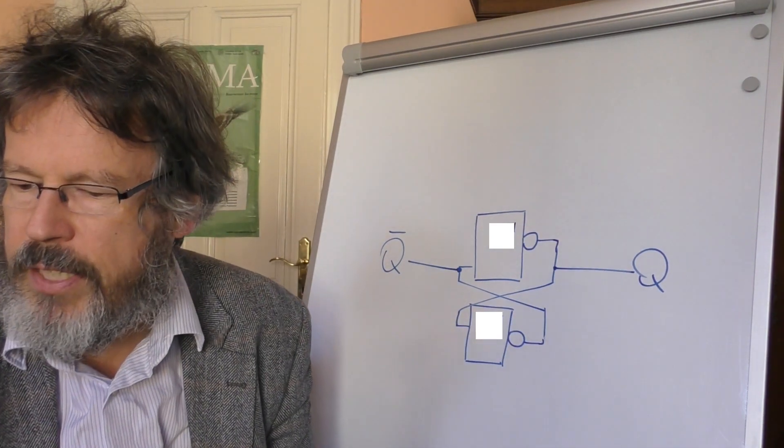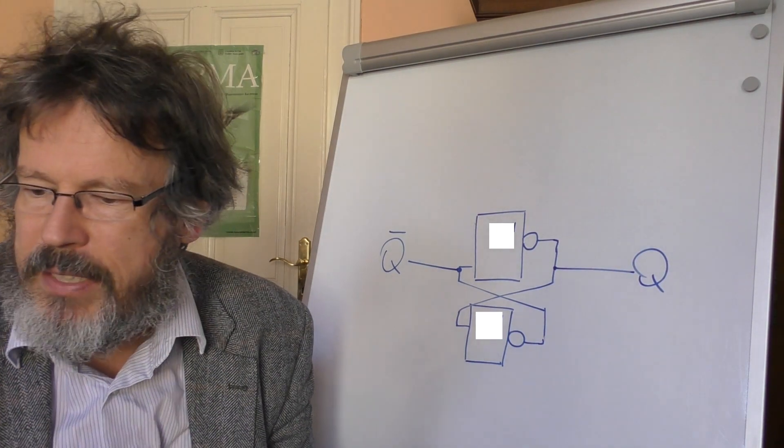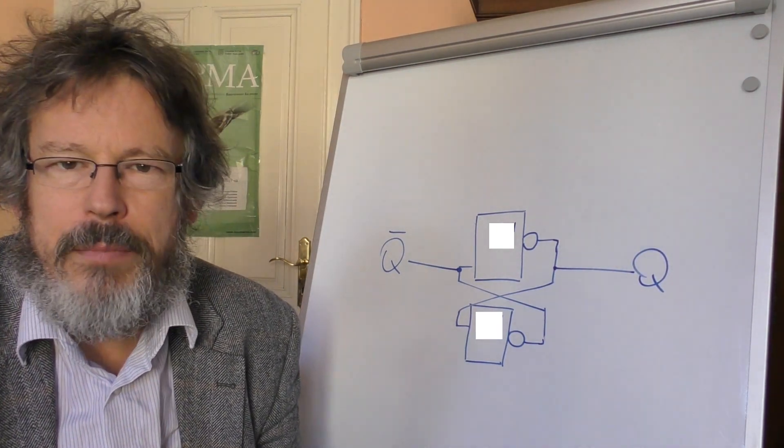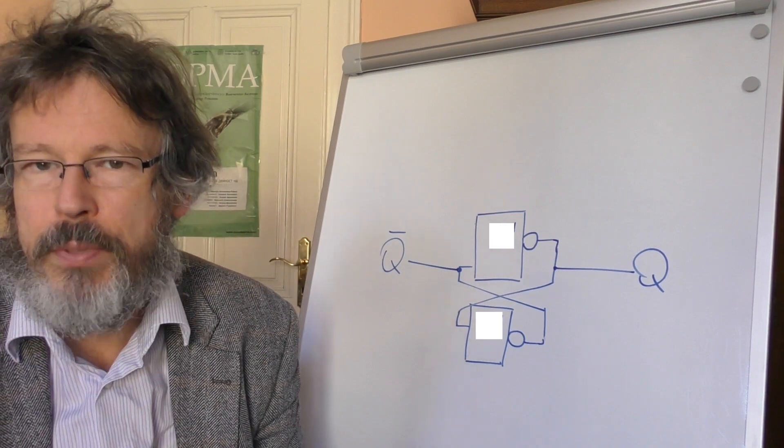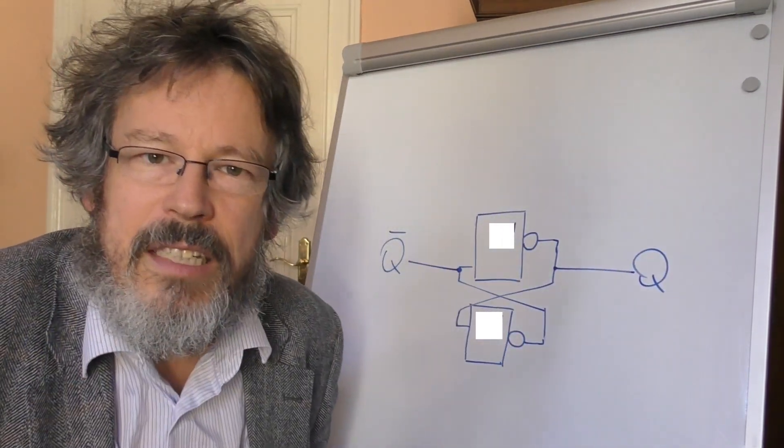This is called a bistable circuit or a bistable flip-flop. It's a system that simply has two possible stable states, and as soon as the system is in one of these states it typically stays there. In this sense, such a circuit has a memory.